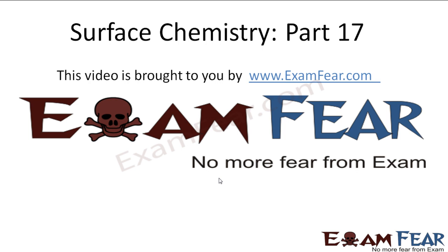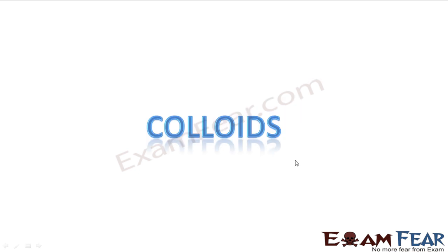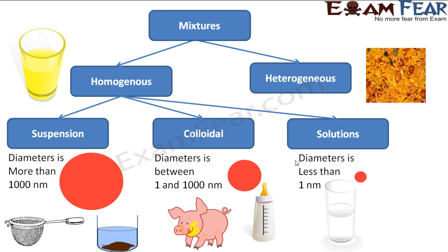Let's understand a new concept called colloids. To understand this, let's look at the hierarchy. For any given mixture, it can be a homogeneous mixture or a heterogeneous one. Homogeneous means if you take any small portion from any place, it will have a uniform amount of substance. Heterogeneous is not uniform — if you take a small amount from different places, you get a different variety of substance.